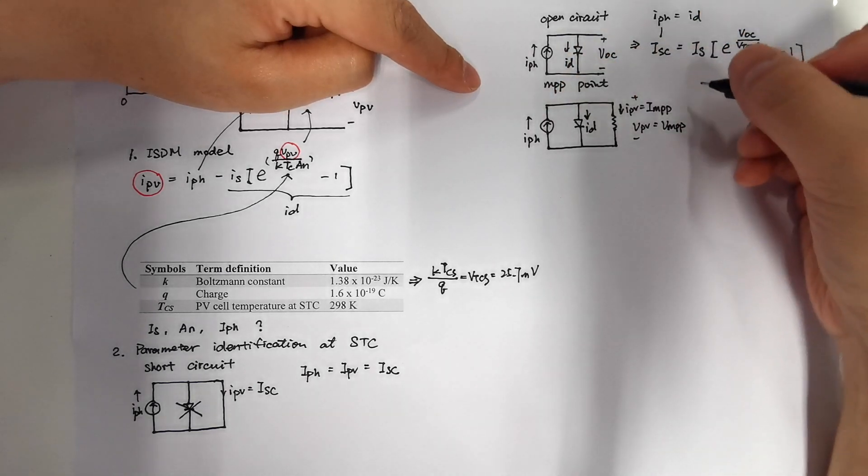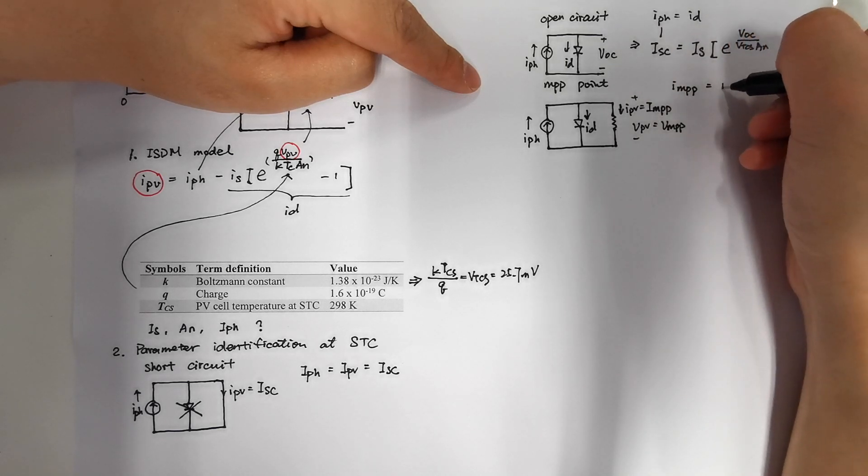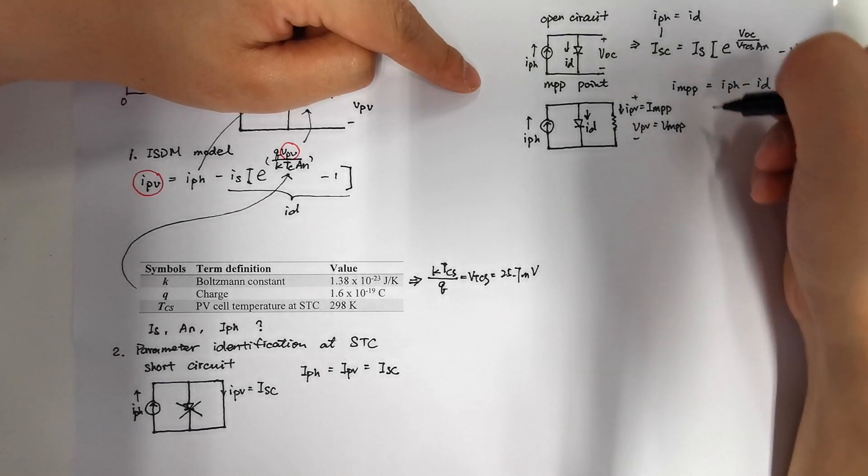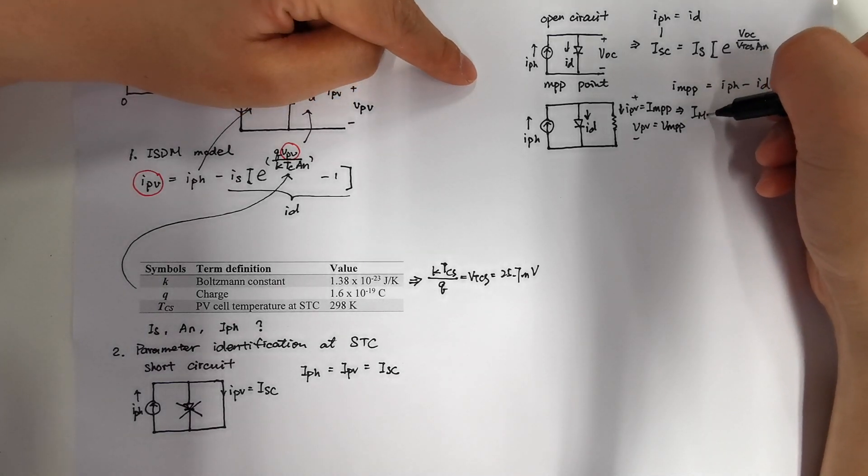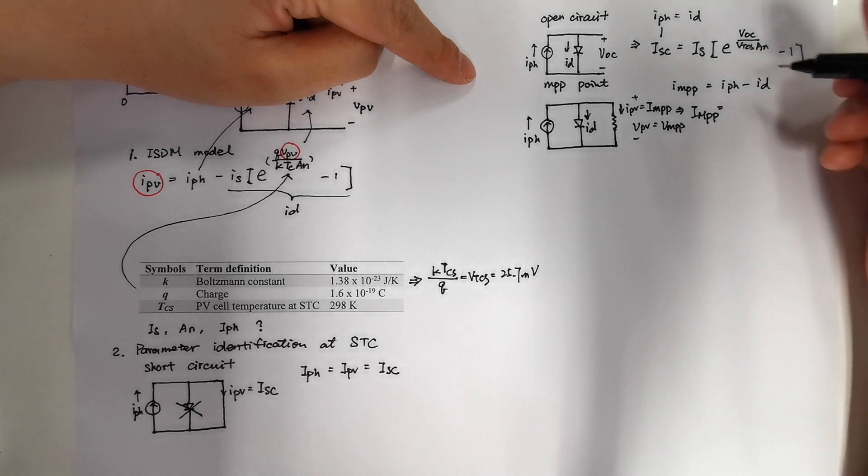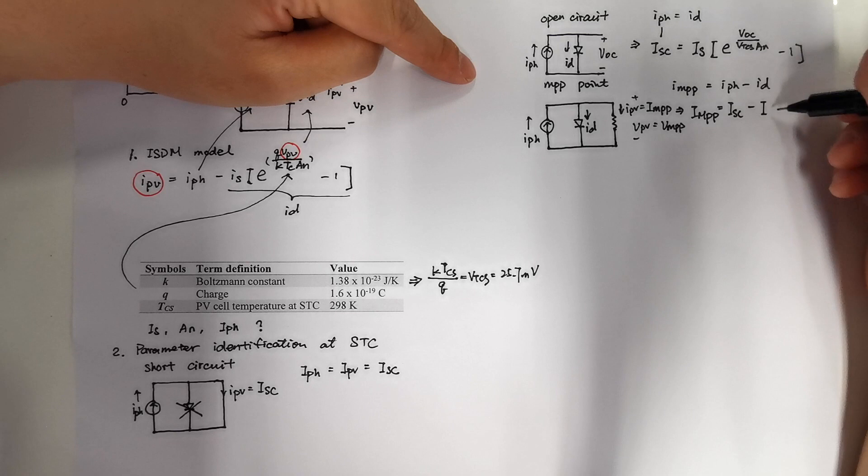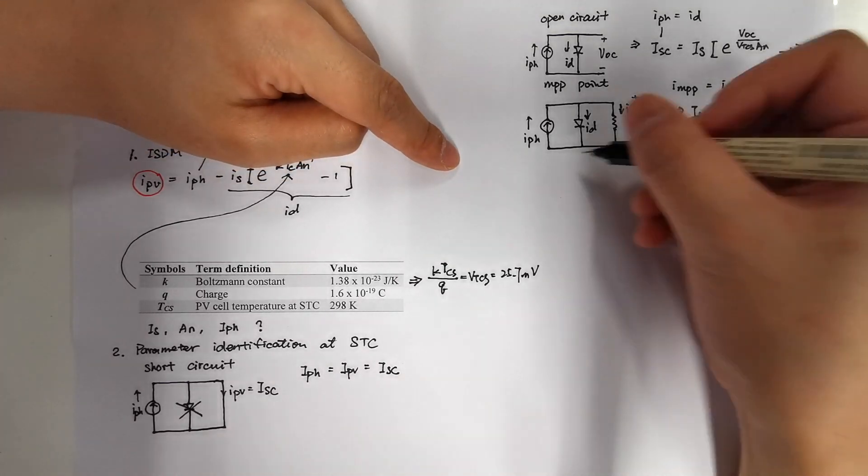At this time, our PV cell output IPV equals to IMPP and our VPV equals to VMPP. So our IMPP equals to IPH minus ID. And by replacing IMPP and ISC value into this equation, we can get IMPP equals to ISC minus IS times e to the power of VMPP divided by VTCS times AN minus 1.